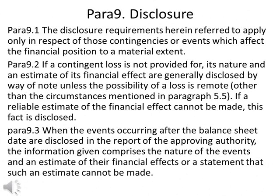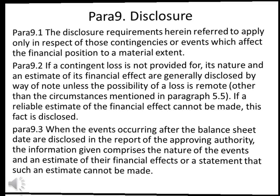Paras 9. Disclosure. Paras 9.1: The disclosure requirements herein referred to apply only in respect of those contingencies or events which affect the financial position to a material extent. Paras 9.2: If a contingent loss is not provided for, its nature and an estimate of its financial effect are generally disclosed by way of note, unless the possibility of a loss is remote, other than the circumstances mentioned in paragraph 5.5. If a reliable estimate of the financial effect cannot be made, this fact is disclosed. Paras 9.3: When the events occurring after the balance sheet date are disclosed in the report of the approving authority, the information given comprises the nature of the events and an estimate of their financial effects, or a statement that such an estimate cannot be made.